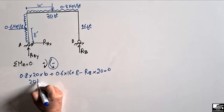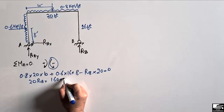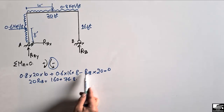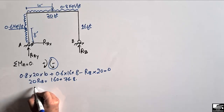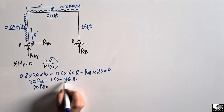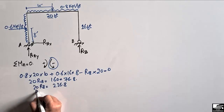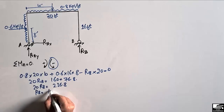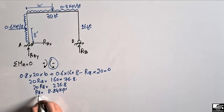So 20 × RB equals 160 plus 76.8. Adding these values: 20 × RB = 236.8. Dividing by 20, RB comes out to be 11.84 kips. This means the reaction at support B is 11.84 kips.